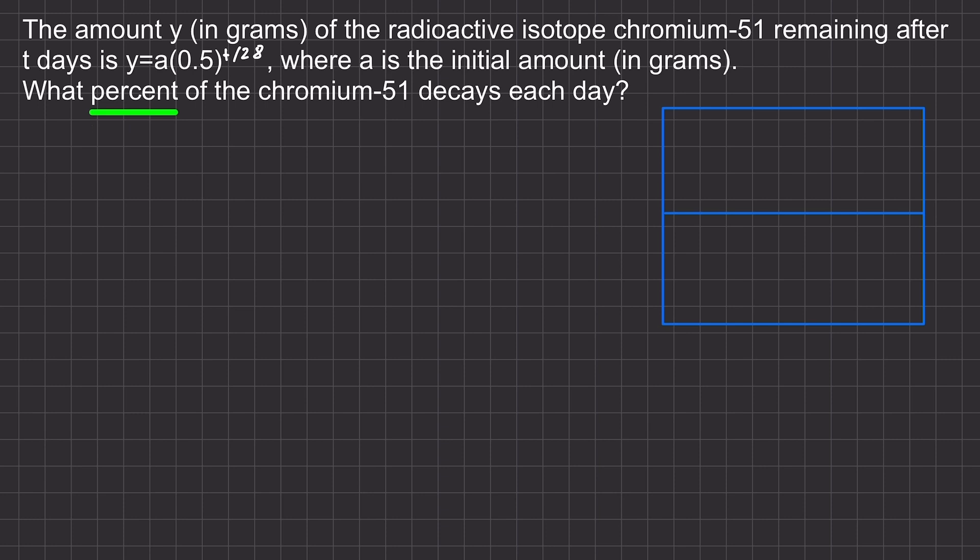Recall from the last video that exponential growth can be modeled by y equals a times 1 plus r in parentheses raised to the power of t. And exponential decay can be modeled by y equals a times 1 minus r in parentheses raised to the power of t. Also recall that r is the percent decrease.